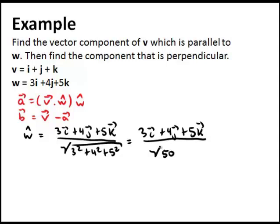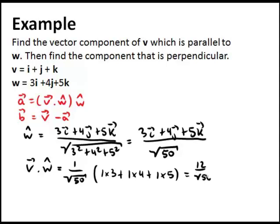Now we need to calculate this dot product. We might as well write 1 over root 50 just here, factorize this, and then calculate 1 times 3 plus 1 times 4 plus 1 times 5. What we get is 3 plus 4 plus 5, which is 12. So this is 12 divided by the square root of 50.